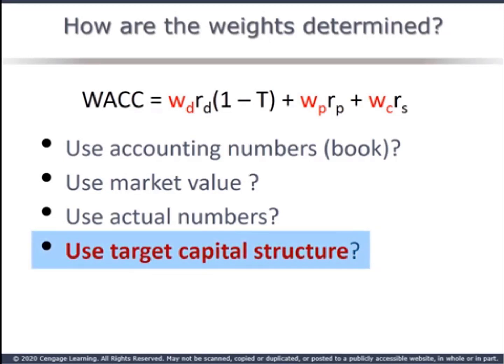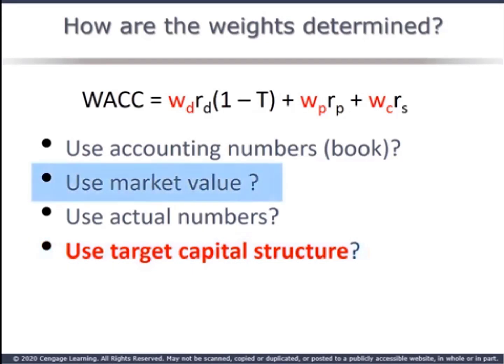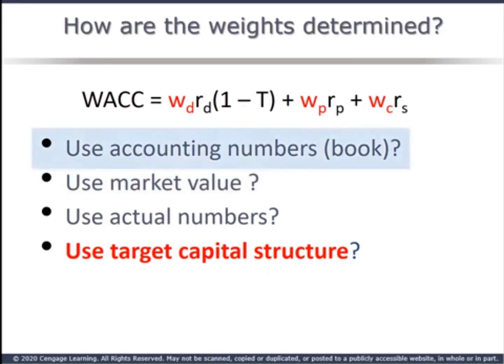The optimal source for weights is the firm's own target capital structure. As an insider, you may have access to this data; as an outsider, you may not. The next best choice is to use market value weights. The market value of equity is simply the number of shares outstanding times the price per share. Market value of debt is the number of bonds outstanding times the current selling price per bond. Using book value is a last resort since book value may not correctly reflect market values.